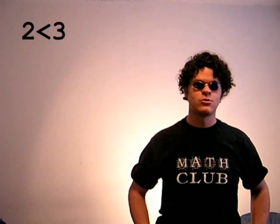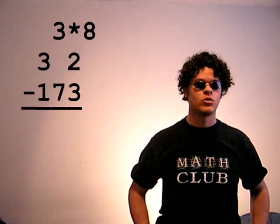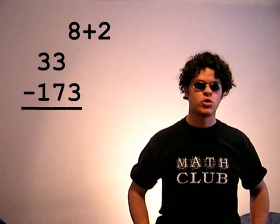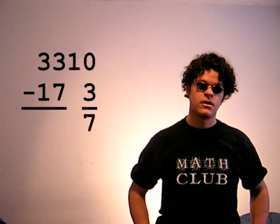You can't take 3 from 2. 2 is less than 3, so you look at the 4 in the 8s place. Now that's really 4 eights, so you make it 3 eights, regroup, and you change an 8 to 8 ones, and you add to the 2, and you get 1 2 base 8, which is 10 base 10, and you take away 3. That's 7. Okay?